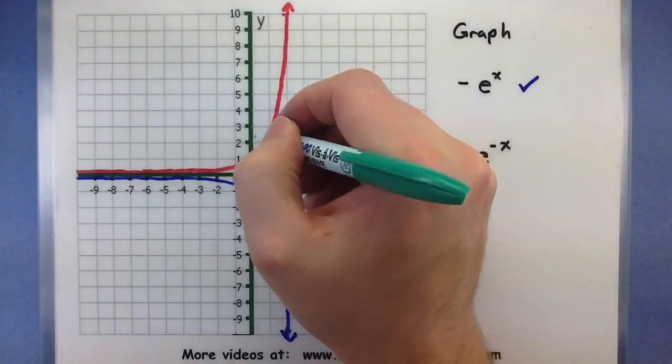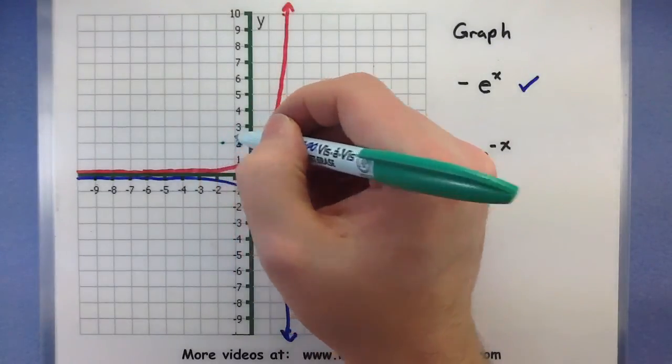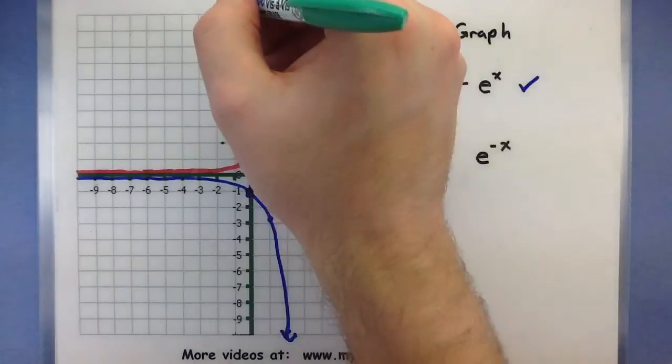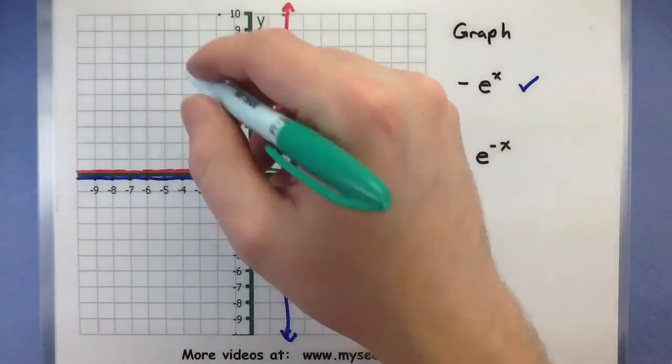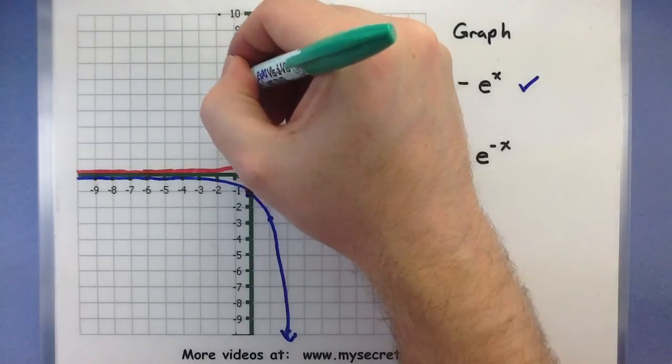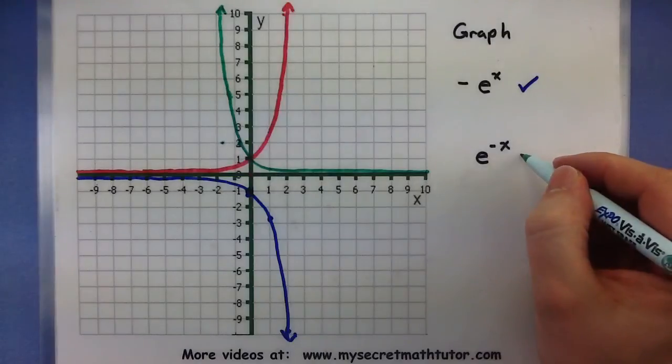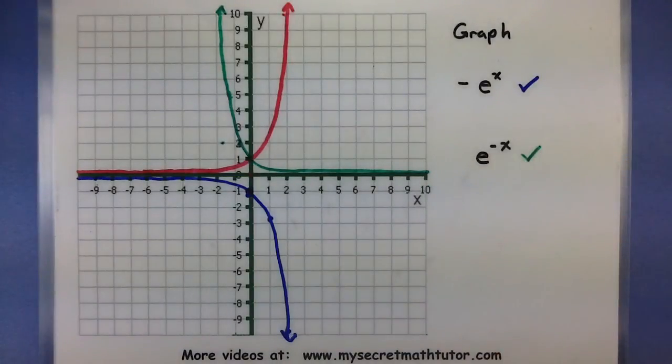So I have an x-value here right before one, that's going to be right before one over here. And this guy's going to be way up here near 10. There we are. So again, a very similar shape, but this one has been flipped over the y-axis.